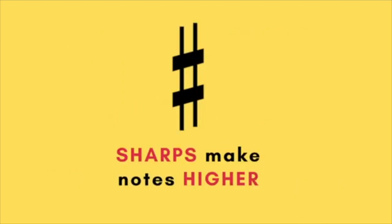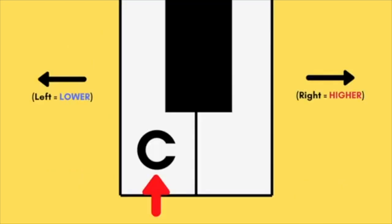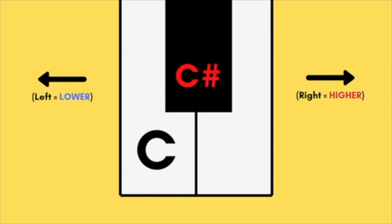Sharps make notes higher. If this note is a C, adding a sharp makes it this note: C sharp.